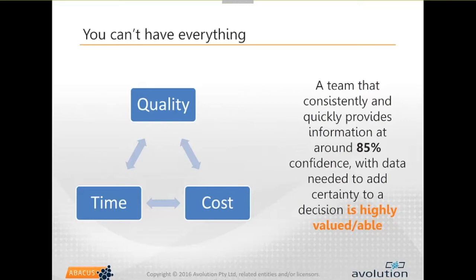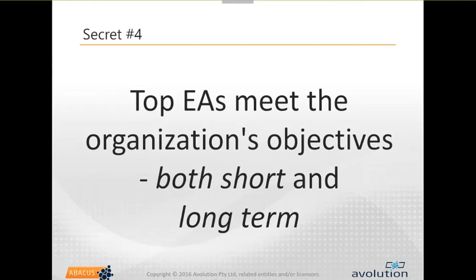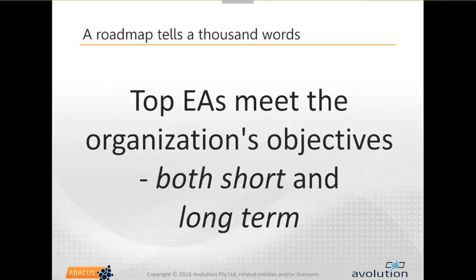Secret number four: good enterprise architects meet the objectives in the short term - so they're very tactical - but also in the long term, being strategic. It's about floating between those two - knowing when you need to give a tactical answer to help a business make an immediate decision versus working more in the background on things that are bubbling along more slowly and are more strategic. Because you still can't have that black hole where you disappear for six months to do some analysis piece - you need to be returning tactical advice very quickly. I've done presentations before for the Open Group all about road mapping and how a framework like TOGAF supports that.